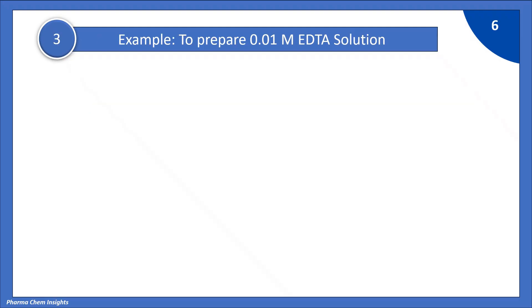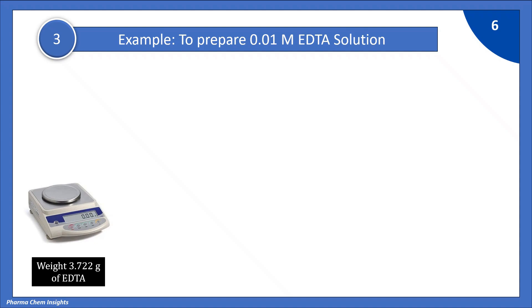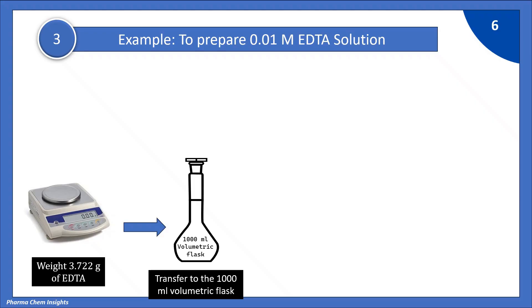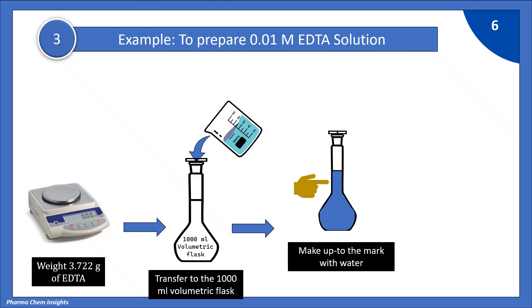Now let's see how to prepare 0.01 molar EDTA solution schematically. First, weigh 3.722 grams of EDTA on a weighing balance. Transfer this weight to a 1000 ml volumetric flask. Add 500 ml of water, sonicate to dissolve it, and make up to the mark with water. This is your 0.01 molar EDTA solution.